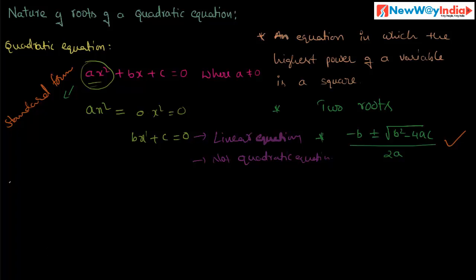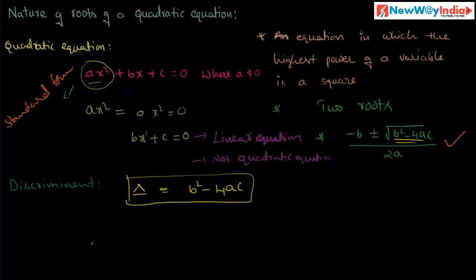Next, the discriminant. The discriminant determines the nature of the roots of any quadratic equation. It is denoted by delta and is equal to b squared minus 4ac — the radicand part of the quadratic formula. By using this formula we can find the discriminant of any quadratic equation, which gives us the nature of its roots.